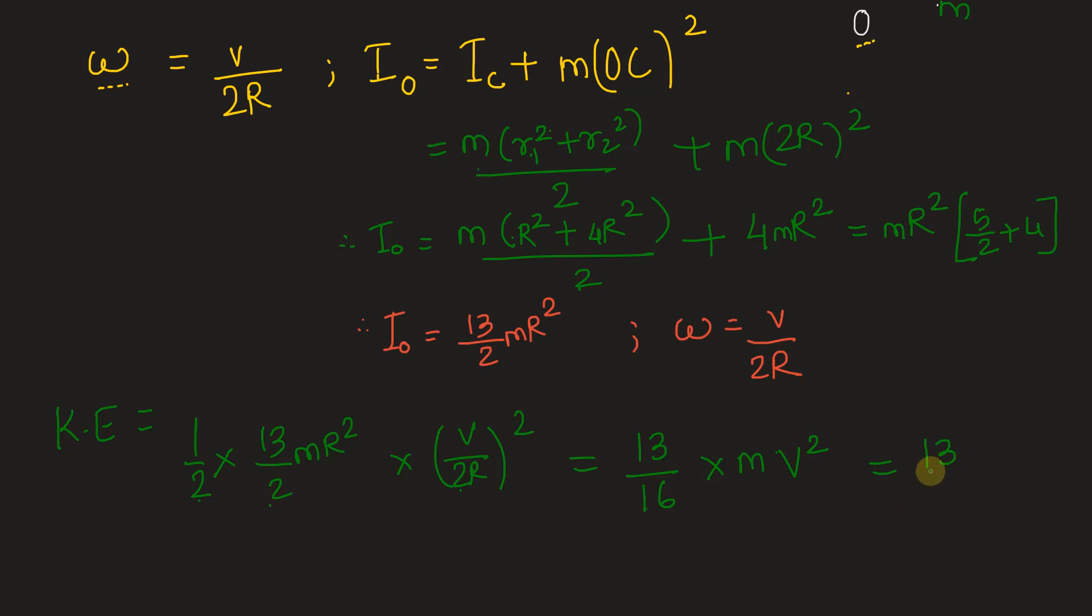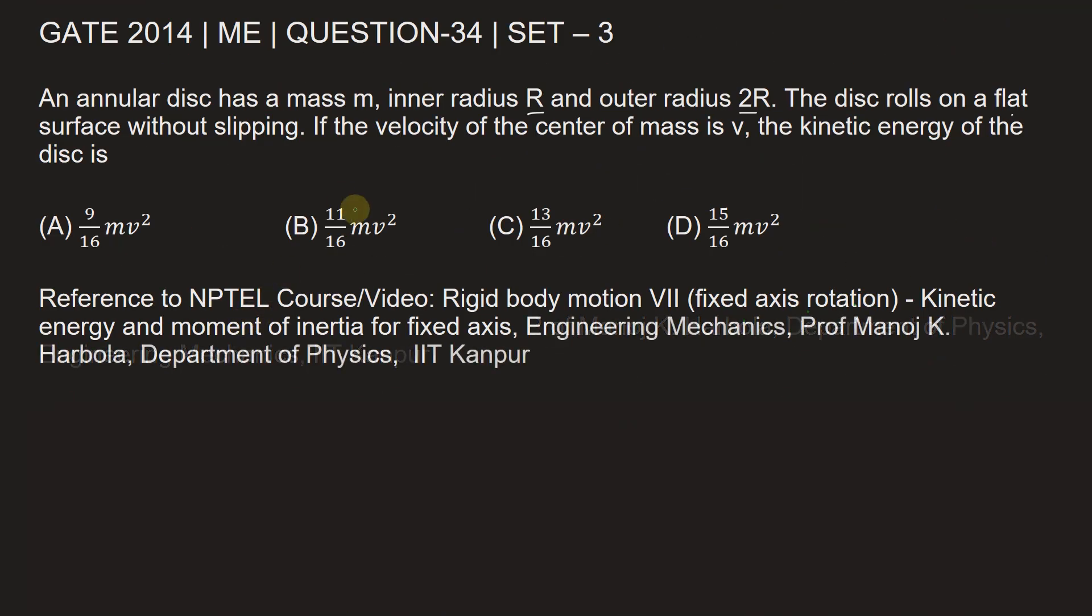So, the answer that we get is 13 by 16 mv square. Let's go back and mark the correct option. The correct option is option C, that is kinetic energy of the disc is 13 by 16 mv square.